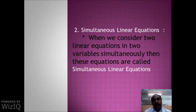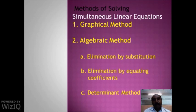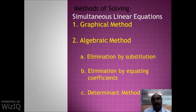When we find the solution of simultaneous linear equations, if we put that value of variables into the equations, both equations get satisfied simultaneously — that is why they are called simultaneous linear equations. To solve simultaneous linear equations, there are some methods. The methods are: first, the graphical method; and second, the algebraic method. In the algebraic method, there are three sub-methods: elimination by substitution, elimination by equating the coefficients, and the determinant method, also called Cramer's rule.